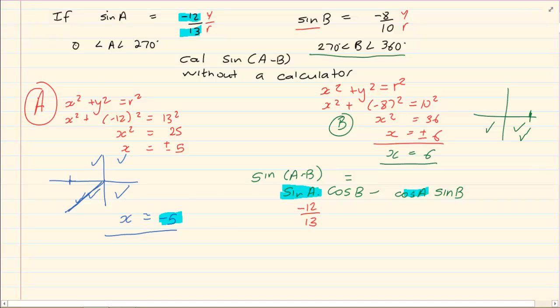We have another A cos A. So that's going to be minus 5 over 13. Cos B. We are going to use the B values. Cos B is x over r. And sin B is y over r.